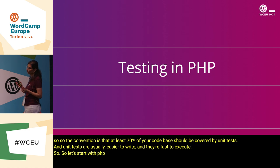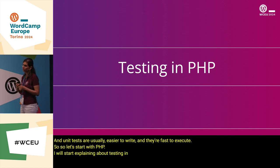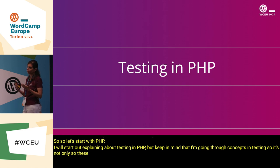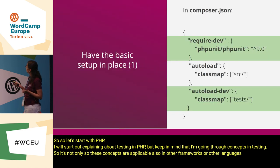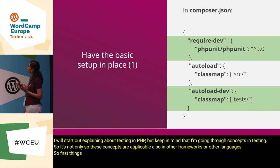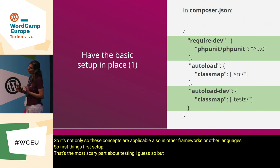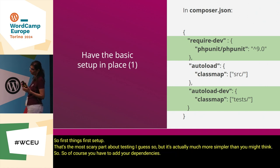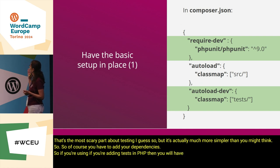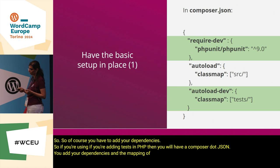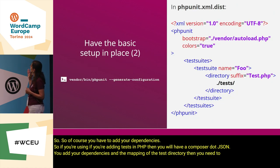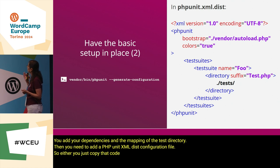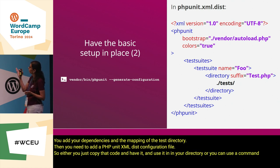Let's start with PHP. I'll explain testing in PHP, but keep in mind these concepts are applicable in other frameworks and languages too. For setup — the most scary part, but actually much simpler than you might think — you need to add your dependencies. If you're adding tests in PHP, you'll have a composer.json where you add dependencies and the mapping of the tests directory. Then you need to add a phpunit.xml.dist configuration file, either by copying the code or using a command line that generates it for you.